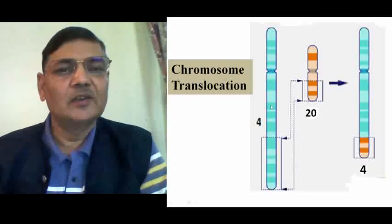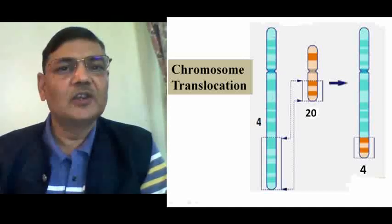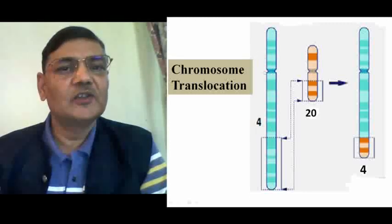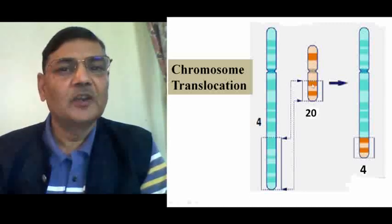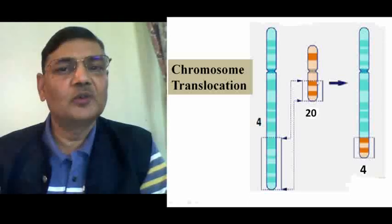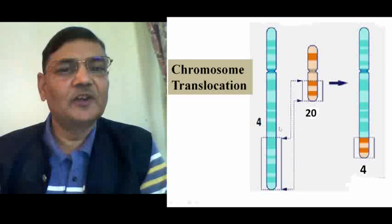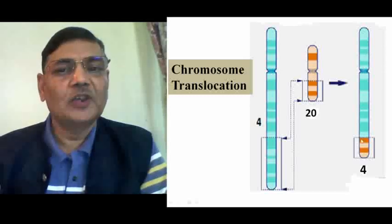We can understand this in the diagram. The left side shows chromosome number 4 — the upper portion is the short arm and the lower portion is the long arm of chromosome 4. The constricted portion is the centromere. A break occurs in the lower portion of this fourth chromosome. The other chromosome, shown in the middle, is chromosome 20. So chromosomes 4 and 20 are two non-homologous chromosomes. A break also occurs in chromosome 20. After this, the segment of chromosome 20 gets shifted to chromosome 4. As a result, the right side shows chromosome number 4 now carrying a small portion of chromosome 20, resulting in translocation.